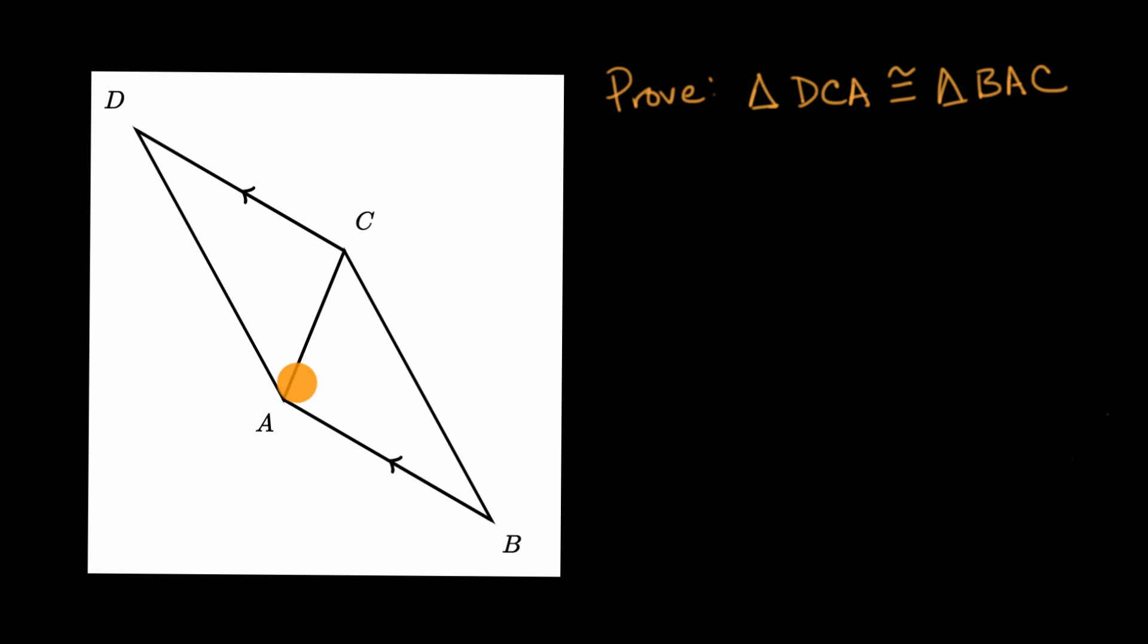And we know that alternate interior angles would be congruent. So we know, for example, that the measure of this angle is the same as the measure of this angle, or that those angles are congruent.